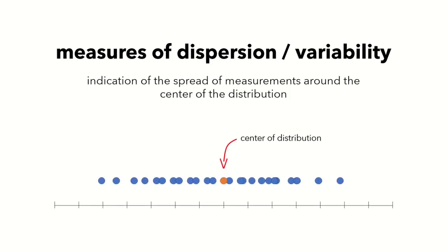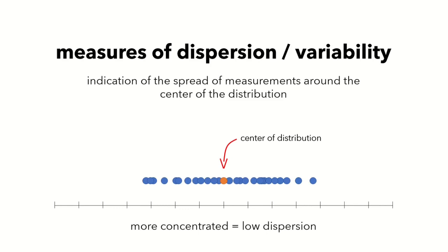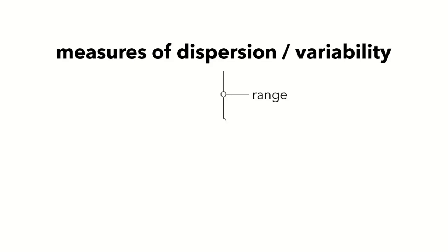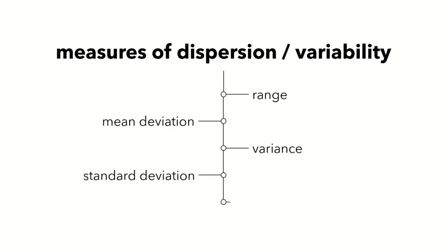Because of these intrinsic variations in our measurements, whenever we report our data it's always useful to have a measure of dispersion or variability — an indication of the spread of measurements around the center of the distribution. Measurements more concentrated around the center have low variability, whereas data more spread out along the measurement scale have high variability. The five common measures of dispersion are the range, the mean deviation, the variance, the standard deviation, and the coefficient of variation. We'll only discuss these five in this lecture.